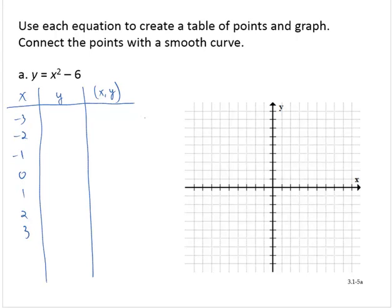And then the y values, let's see. I'd have negative 3 squared minus 6. And that's 9 minus 6, which is 3. Similarly, I'd have negative 2 squared minus 6. 4 minus 6 is negative 2. Negative 1 squared minus 6 is 1 minus 6, negative 5.